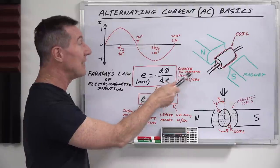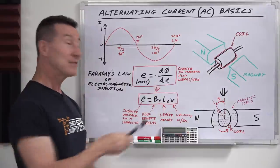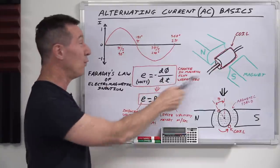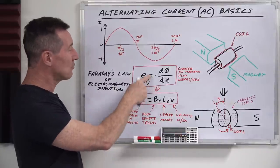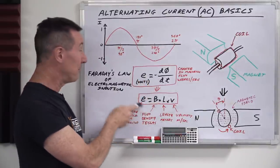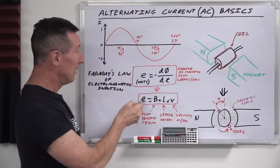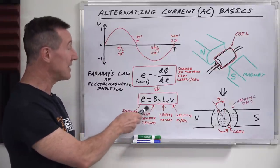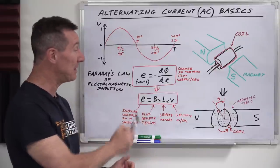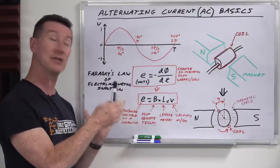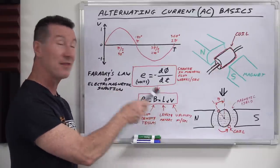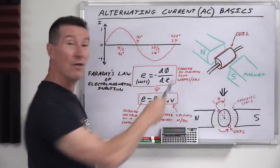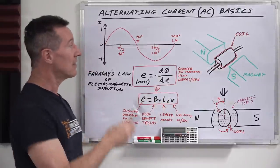This brings us back to a formula from DC fundamentals when we talked about inductors: Faraday's law of electromagnetic induction. The induced voltage in volts equals negative dΦ/dt - the change in magnetic flux in webers per second. The formula for the induced voltage in a conductor in a magnetic field equals the flux density B in teslas, multiplied by the length of the conductor L at 90 degrees to the field in meters, multiplied by the velocity v in meters per second.